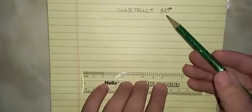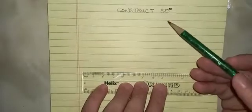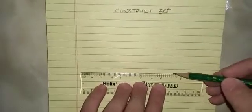We're going to construct 30 degrees. Since 30 degrees is half of 60 degrees, all we're going to do is bisect our 60 degree angle.